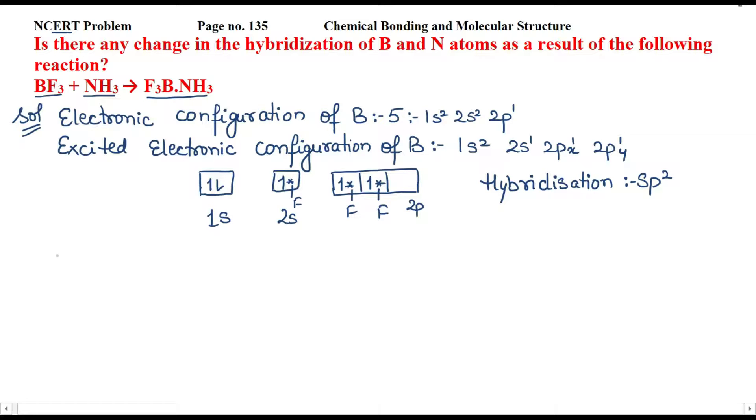Now we will see NH3 hybridization. First let's look at the electronic configuration of nitrogen. Nitrogen atomic number 7, so 1s2, 2s2 and 2p3.